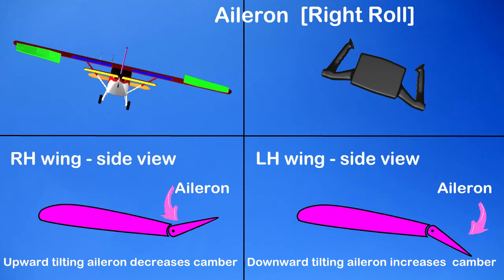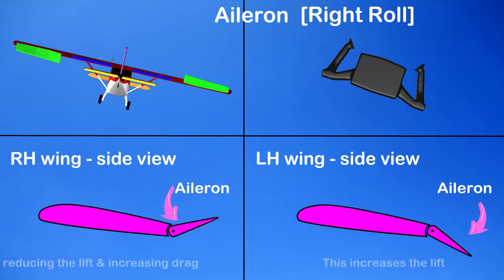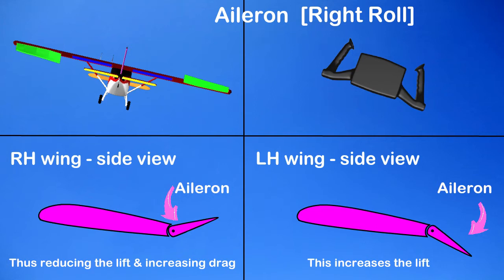On the left hand wing the lift is increased. This causes the right hand wing to move down and the left hand wing to move up.